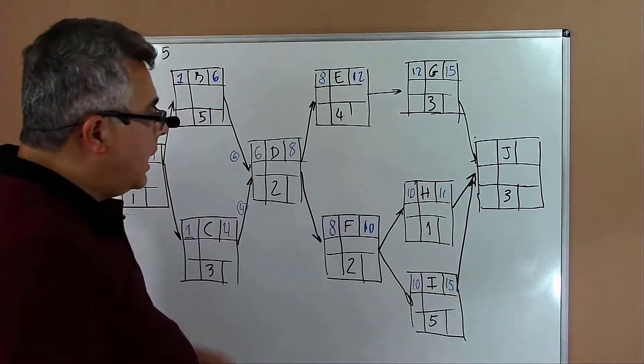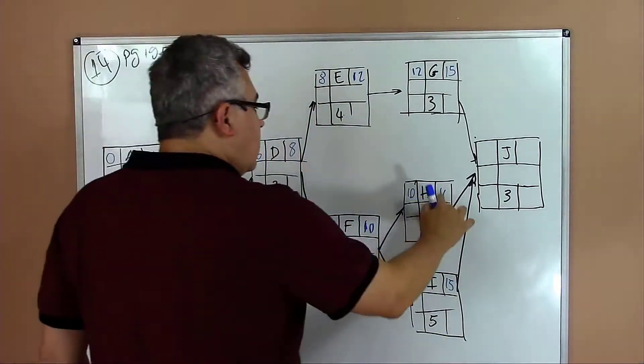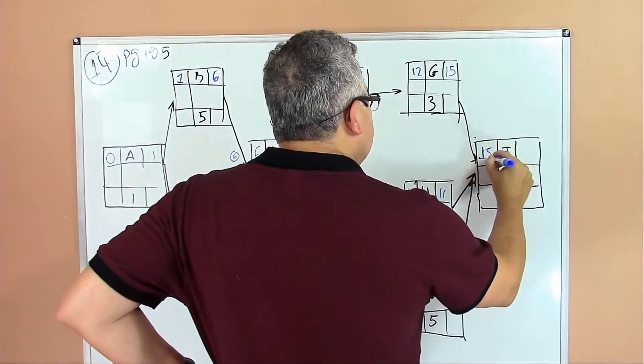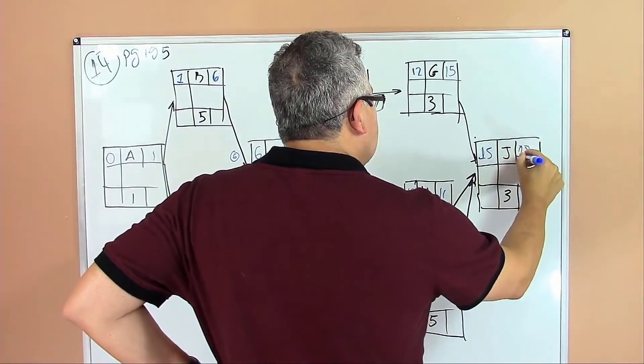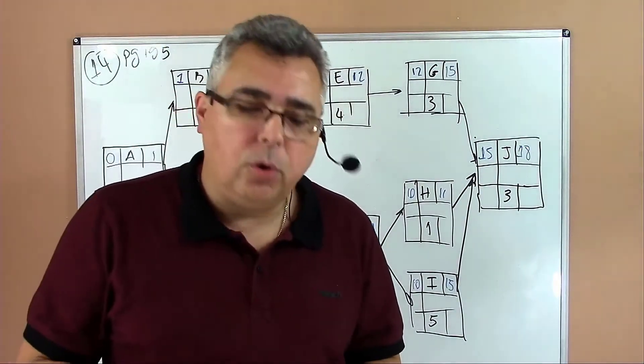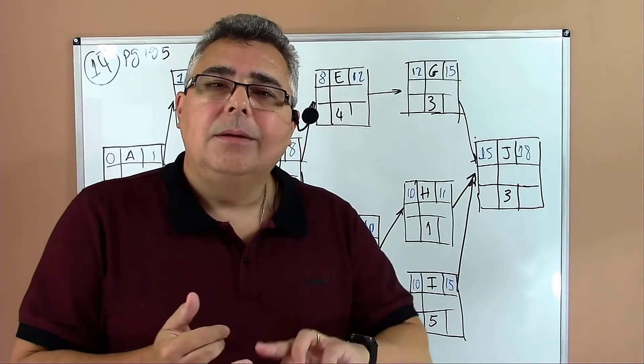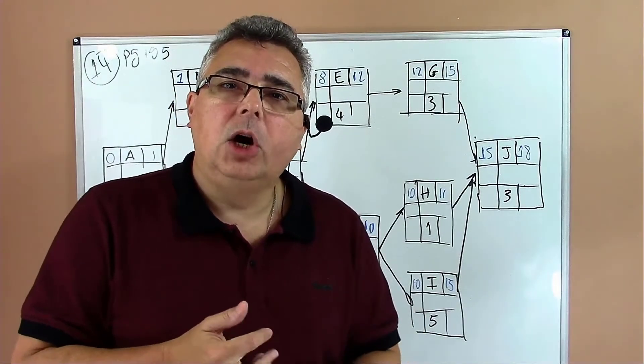Twelve plus three equals fifteen for activity H. Ten plus one equals eleven. Ten plus five equals fifteen. Now we have three conditions which equal fifteen. Fifteen plus three equals eighteen.